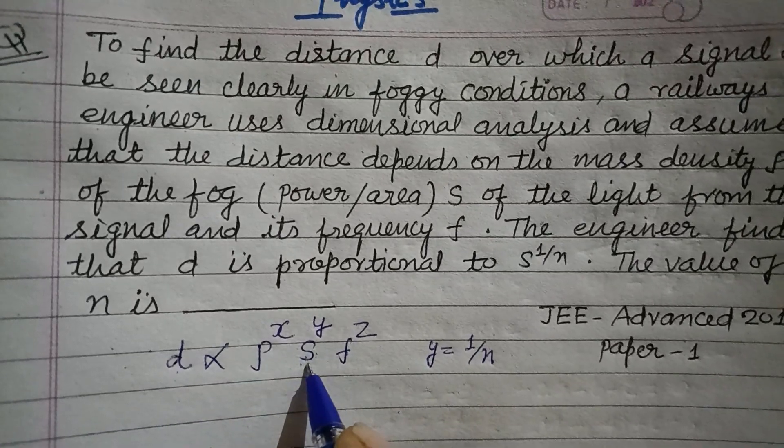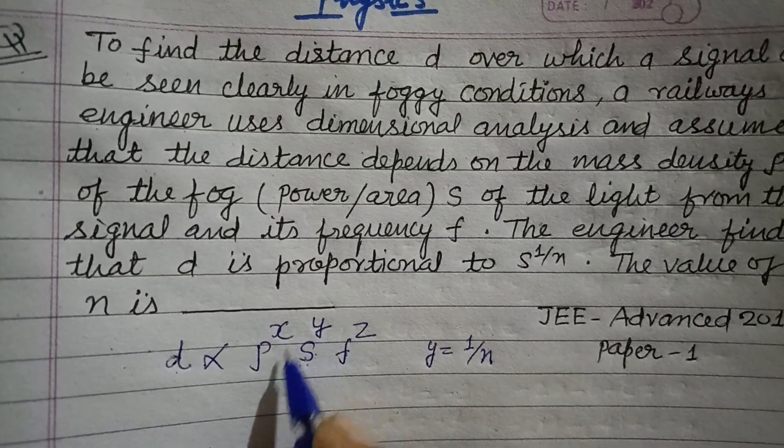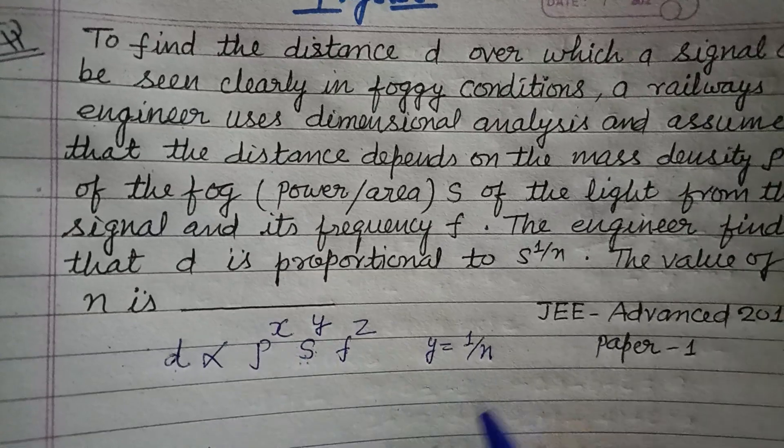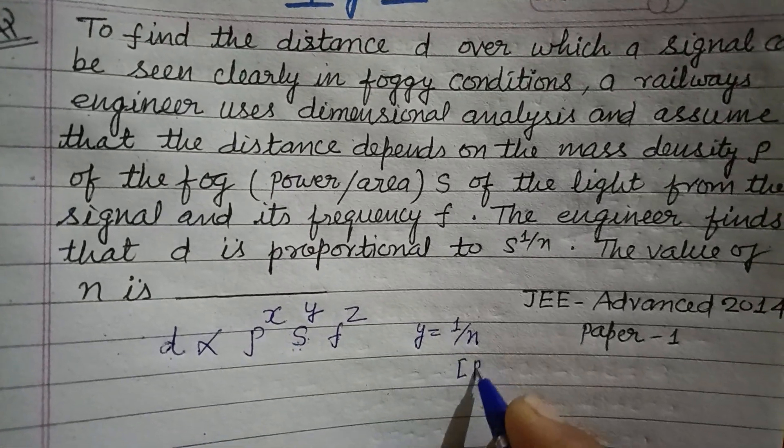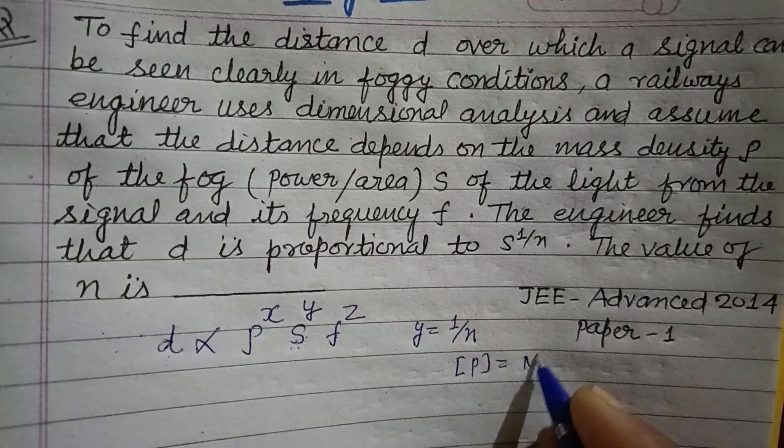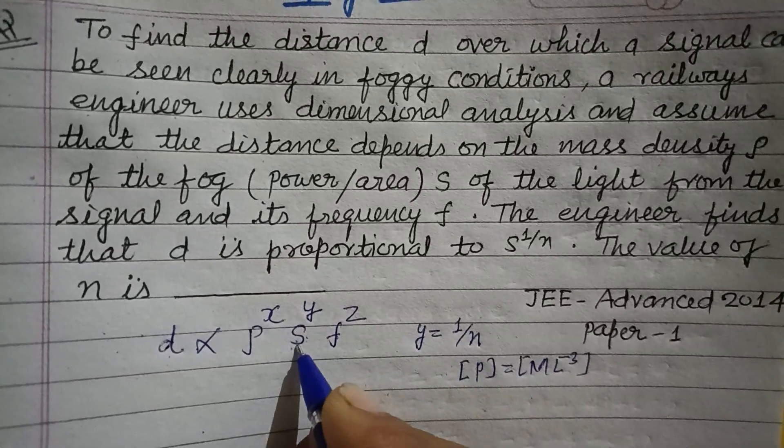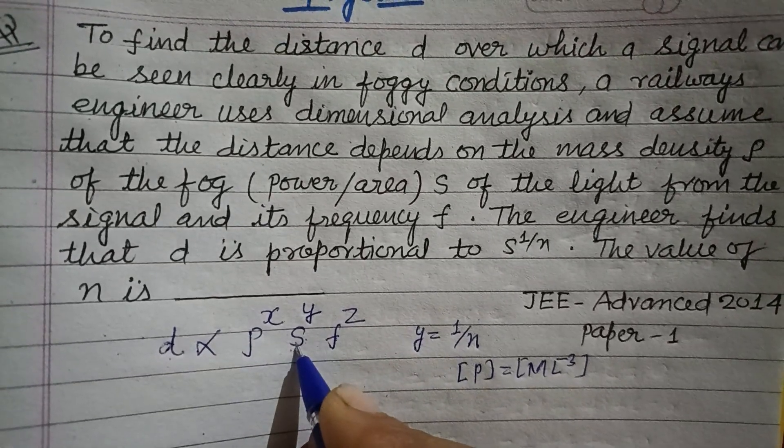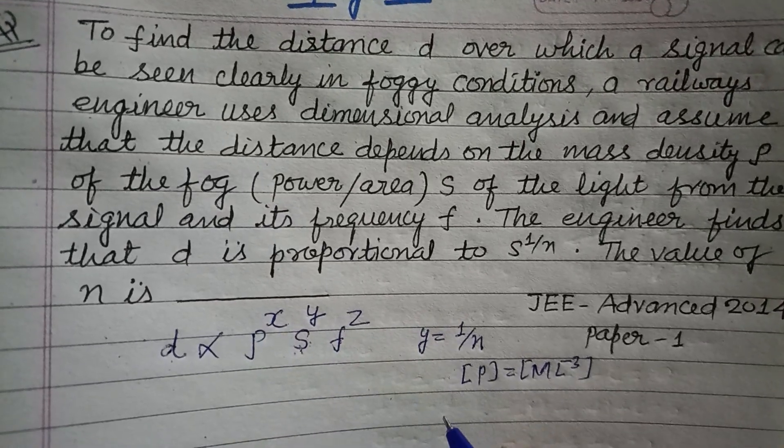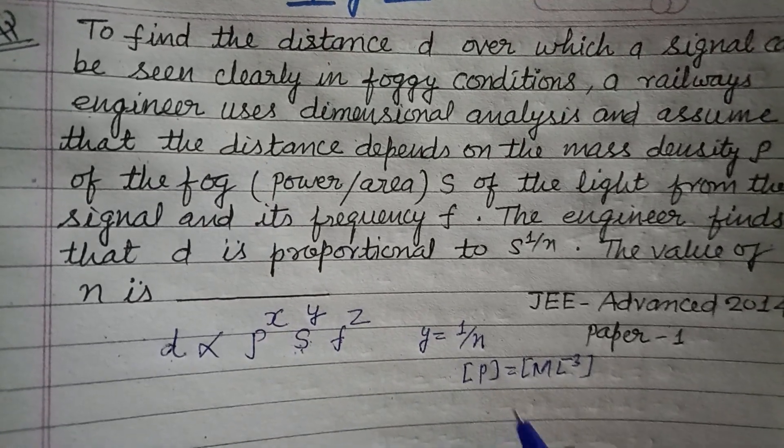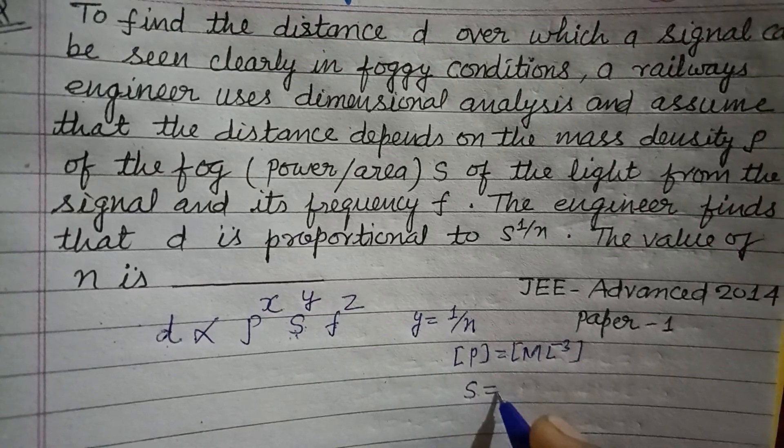Now we find the density. First, dimension of density, you know that ML^-3. And dimension of this intensity is s, which is power upon area, and power is p which is W upon t upon area.